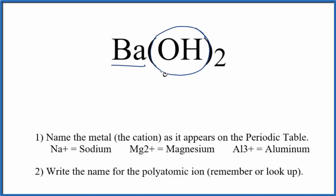When OH is bonded to a metal, it's called the hydroxide ion. So we have two hydroxide ions, and they're bonded to barium, which is a metal.